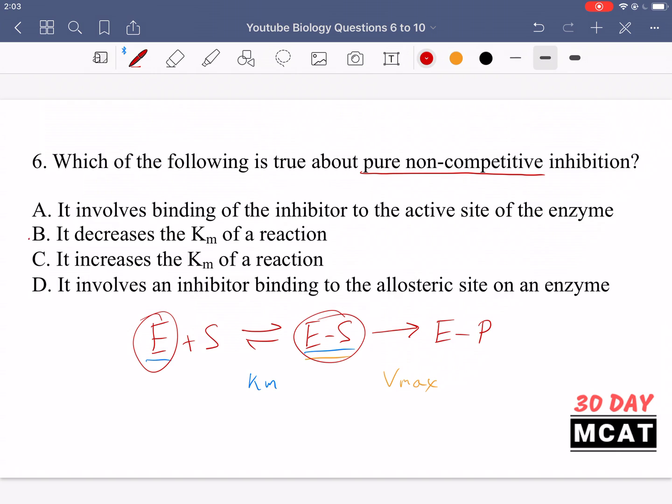So we can remove options B and C because they're saying we either decrease or increase the Km of the reaction. But if you understand the theory behind pure non-competitive inhibition, you know that Km is not affected. And then in between A and D, what's different is talking about where the inhibitor binds. So A is saying it involves binding of the inhibitor to the active site. Therefore, A is incorrect. And then D is going to be correct because it's saying it involves an inhibitor binding to the allosteric site. And yeah, that's what happens when we're talking about something being non-competitive.